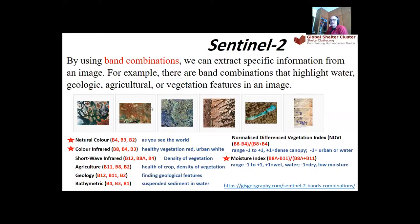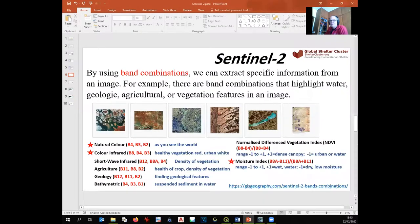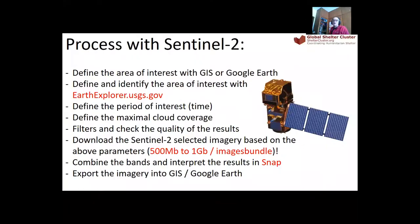A link and document explaining these band combinations is shared in the chat for reference. The workflow starts from scratch: first, using GIS or Google Earth, we define the area of interest. Then we open USGS Earth Explorer — a website — where we navigate to our location of interest. We are working here in Syria, west of Aleppo, where most of the IDP sites are located.